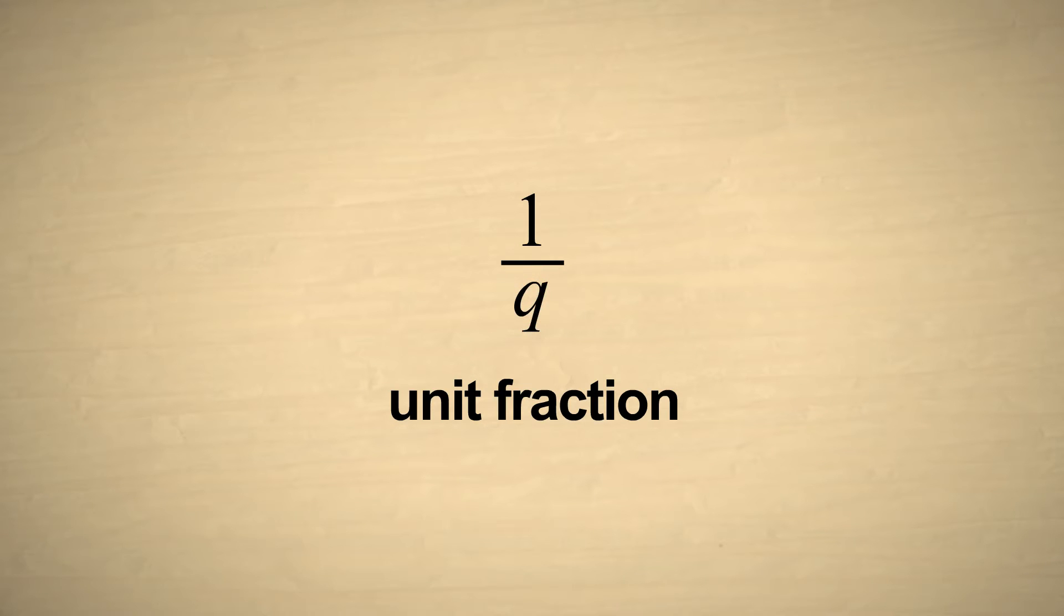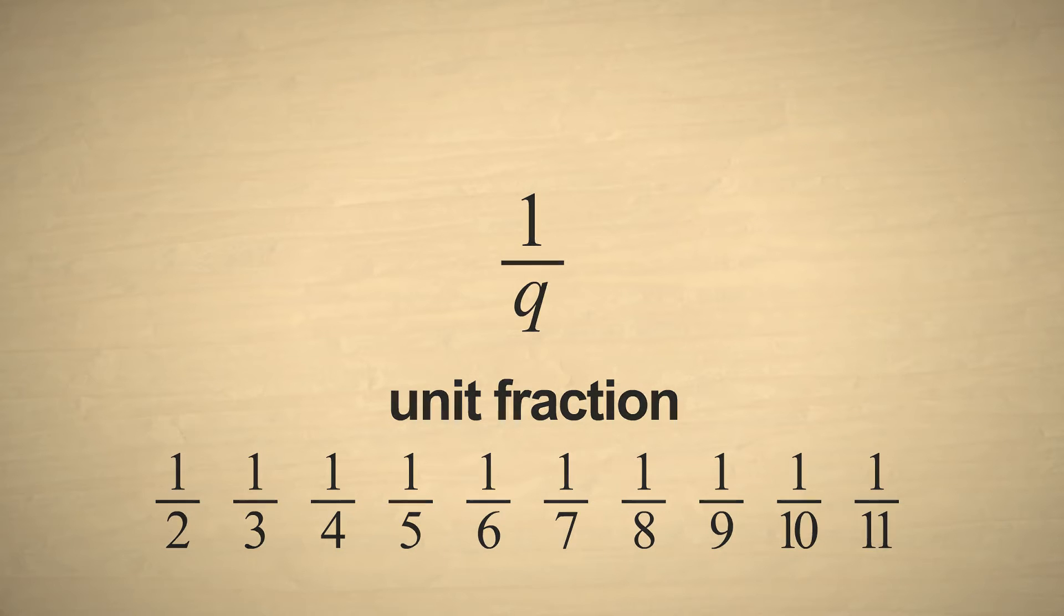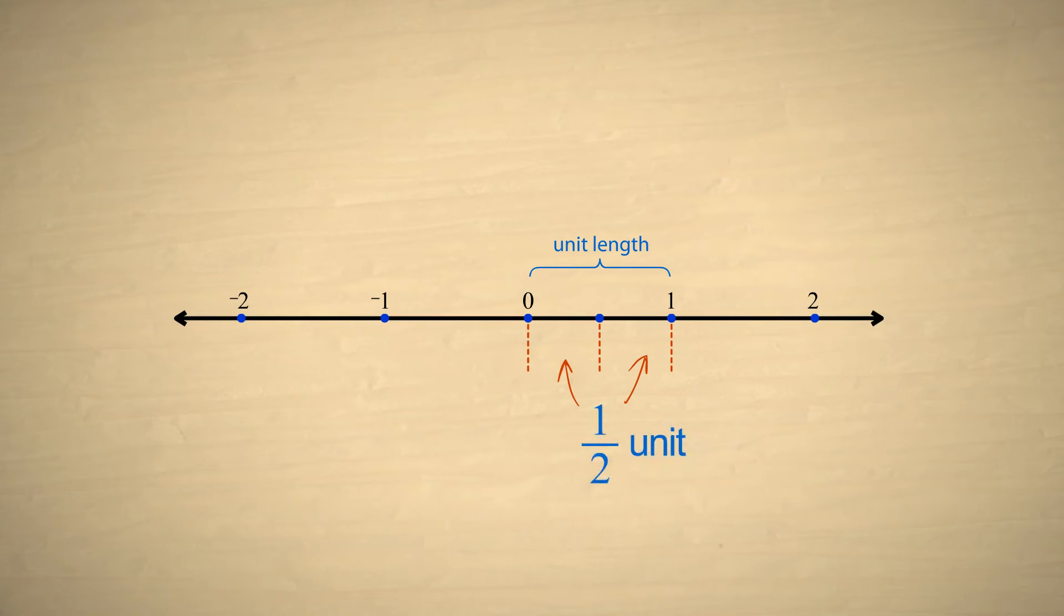Examples of unit fractions are one-half, one-third, one-fourth, and so on. The idea of a unit fraction is simple. If a unit length is divided into some number of equal pieces, a unit fraction represents the length of one piece. The denominator tells us how many of these pieces fit into one unit length.